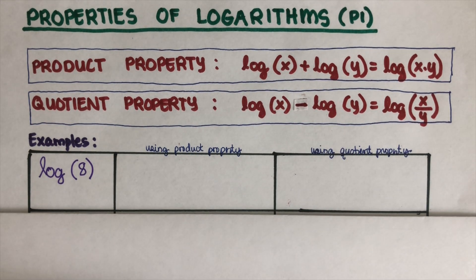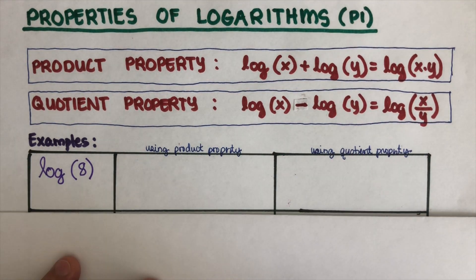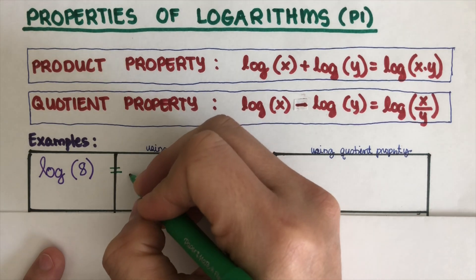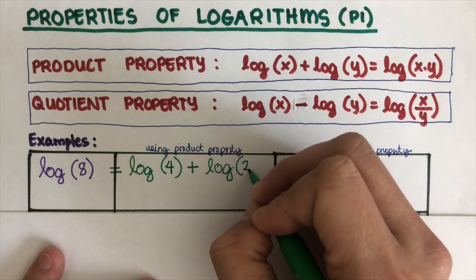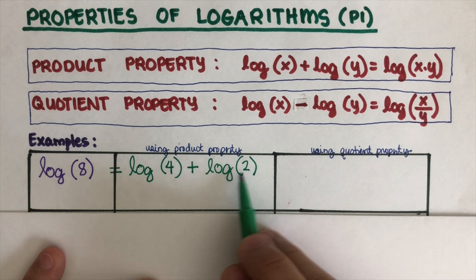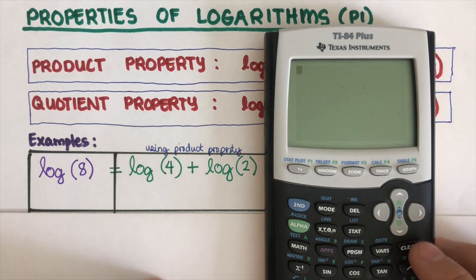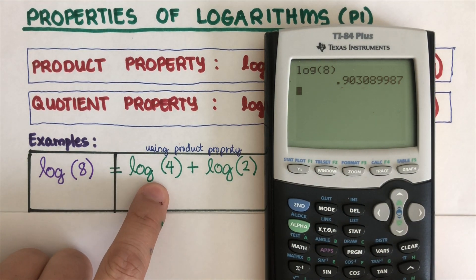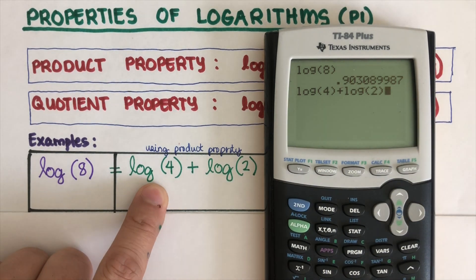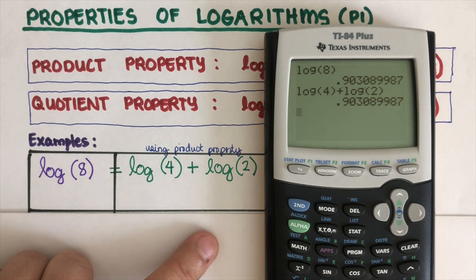Let's have some examples to see how these properties work. How can we expand log of 8 using the product property? This can be rewritten as log of 4 plus log of 2, since 4 times 2 is 8. To verify, let's use a calculator: log of 8 gives a value, and log of 4 plus log of 2 gives the same value — they match.